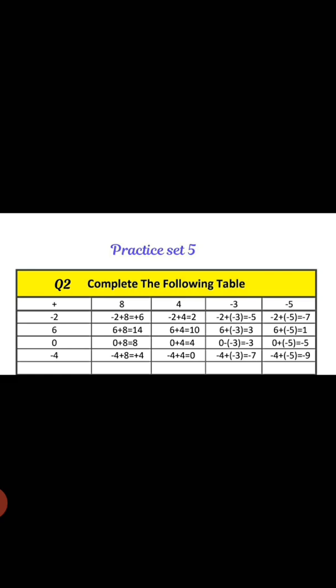Minus 2 plus 4: 4 minus 2 is 2, greater number is positive, answer positive 2. 6 plus 4 is 10. 0 plus 4 is 4. Minus 4 plus 4: different signs, subtract 4 minus 4 is 0, and 0 will not have any sign. Minus 2 plus minus 3: both negative, same signs so add — 3 plus 2 is 5, sign remains minus, so minus 5. 6 plus minus 3: different, subtract 6 minus 3 is 3, greater number is positive, so plus 3.